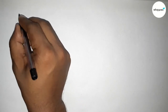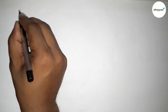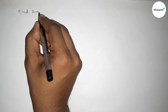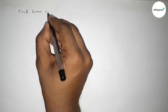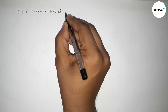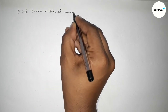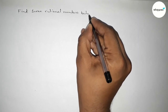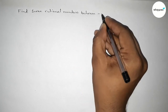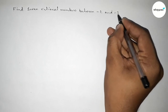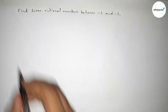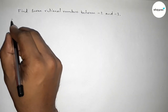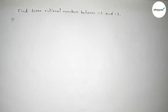Hi everyone, welcome to Essay Share Classes. Today in this video we have to find out seven rational numbers between minus 2 and minus 3. So let's start the video.